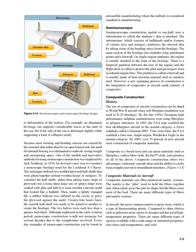Semi-Monocoque. Semi-monocoque construction, meaning partial or one-half, uses a substructure to which the airplane's skin is attached. The substructure, which consists of bulkheads and/or formers of various sizes and stringers, reinforces the stressed skin by taking some of the bending stress from the fuselage. The main section of the fuselage also includes wing attachment points and a firewall. On single-engine airplanes, the engine is usually attached to the front of the fuselage. There is a fireproof partition between the rear of the engine and the flight deck or cabin to protect the pilot and passengers from accidental engine fires. This partition is called a firewall and is usually made of heat-resistant materials such as stainless steel.